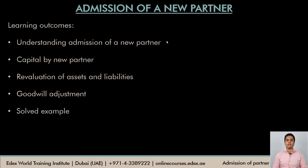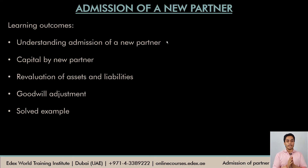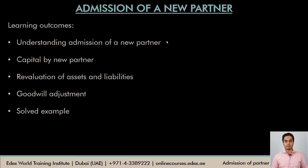In this video we begin with understanding the admission of a partner — what it is and why a partner would be admitted to an existing firm. We also need to understand the various adjustment entries that have to be done at the time of admission. In this video we will cover the capital entry by the new partner and the revaluation of assets and liabilities. In the next video we will cover the goodwill adjustment and one solved example with all the adjustments.